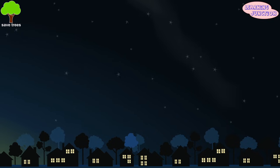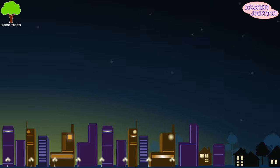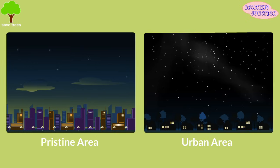Light pollution dramatically reduces the visibility of stars. In pristine areas, clouds appear black and blot out the stars. In urban areas, clouds strongly enhance sky glow.